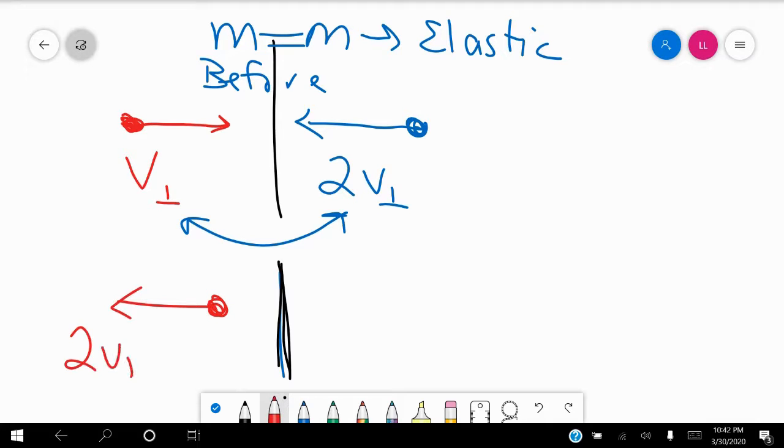the particle from substance one is going to be traveling in the opposite direction at 2V perpendicular, and then the particle from substance two is going to be moving in the opposite direction at V perpendicular.